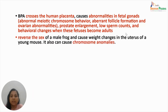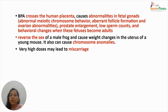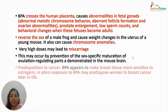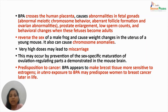BPA also has the power to reverse the sex of a male frog and causes certain weight changes in the uterus of a young mouse, as well as chromosomal anomalies. Very high doses of BPA may lead to miscarriage by preventing sex-specific maturation of ovulation-regulating parts of the brain, as demonstrated in mice. BPA is also linked to predisposition to cancer, as it appears to make breast tissue most sensitive to estrogens following in utero exposure, predisposing women to breast cancer later in life.